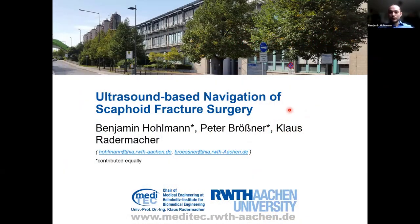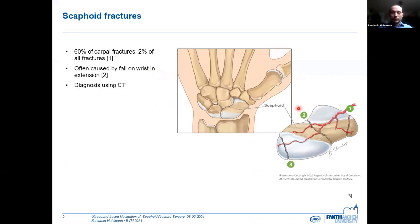The scaphoid is the largest bone in the human wrist, and 2% of all fractures occur on the scaphoid. These are diagnosed using a CT, typically, and as you can see here on the right, there are certain types of fractures depending on the location of the fracture.